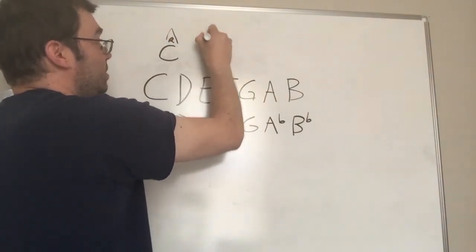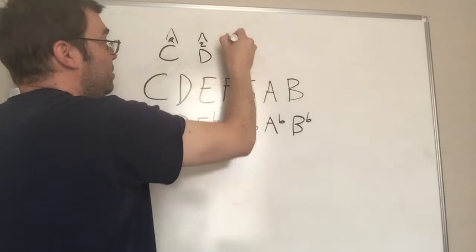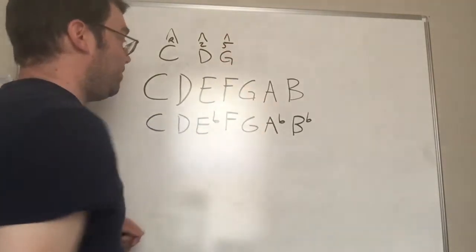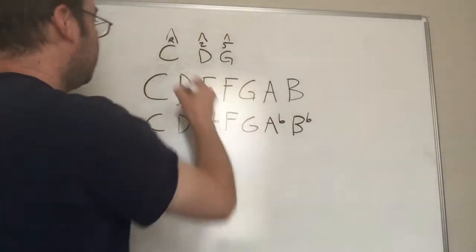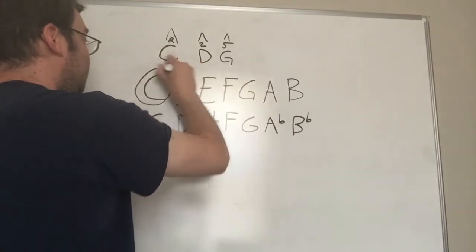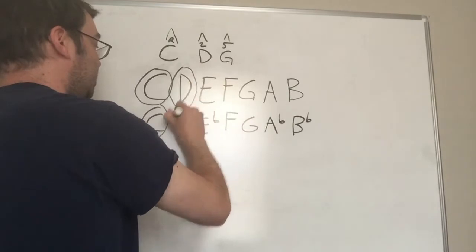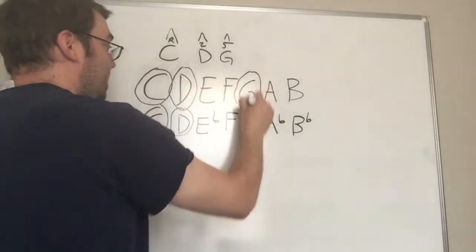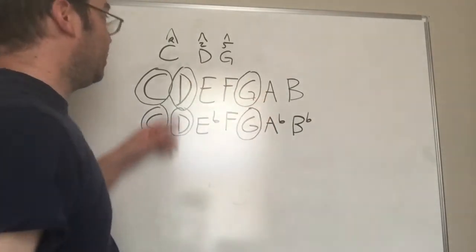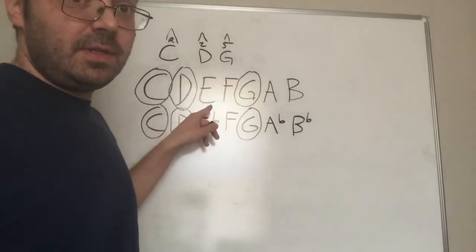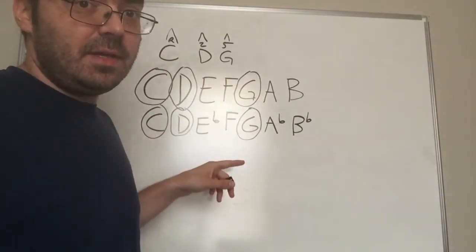Here's our root, here's the II, and here's the V of a chord. Here's the C chord, you've got the C, you've got D, and you've got G as far as notes that this chord contains within the scale.